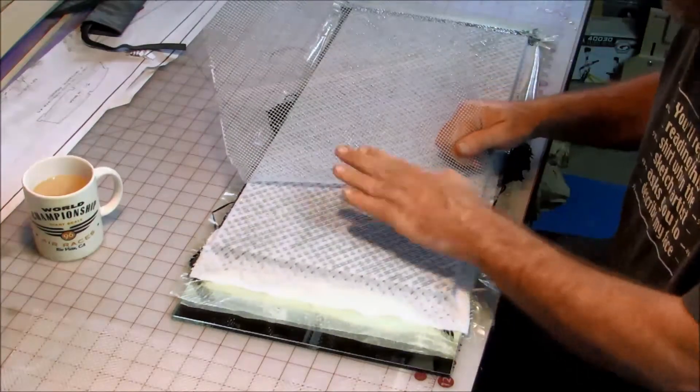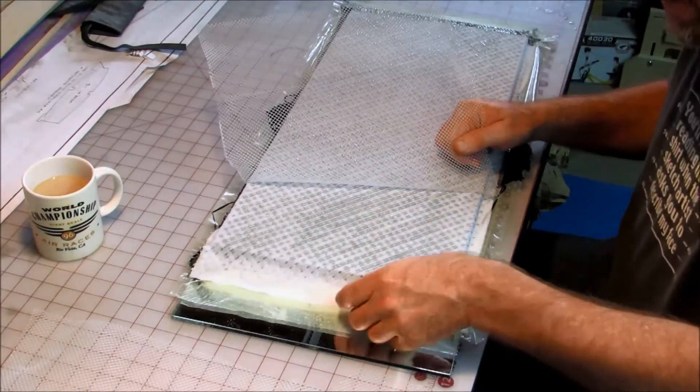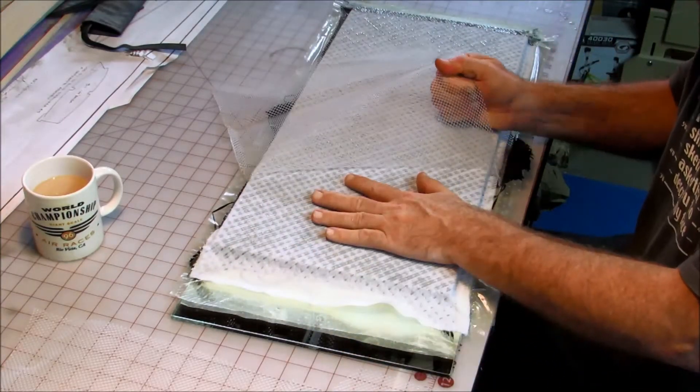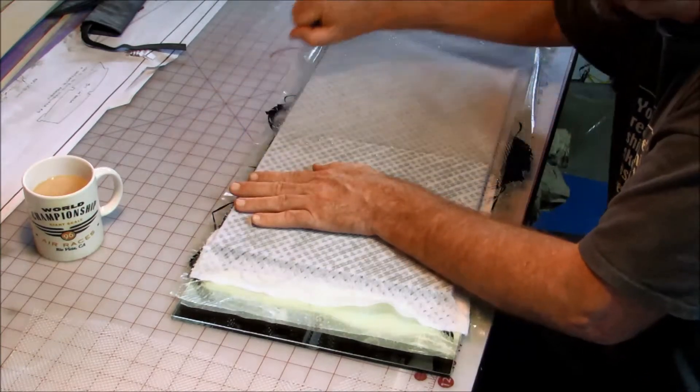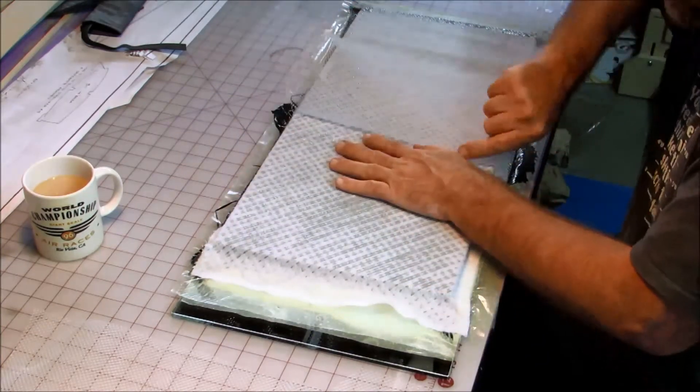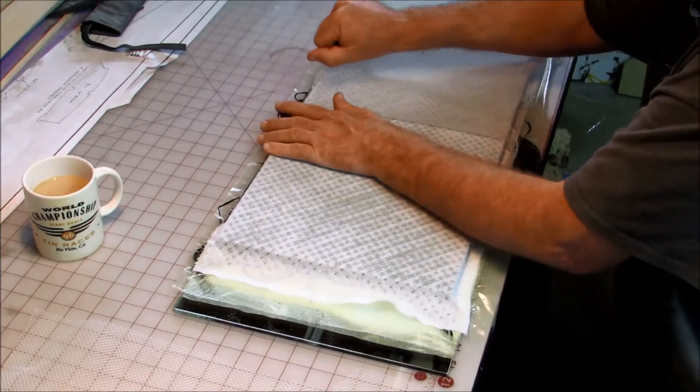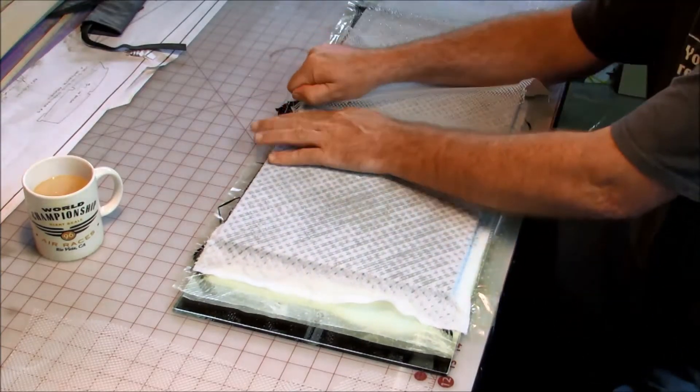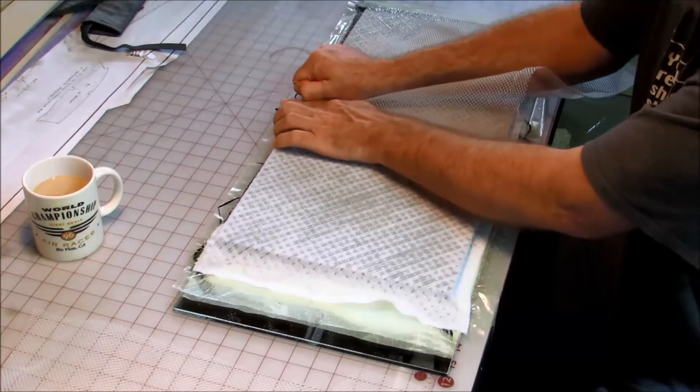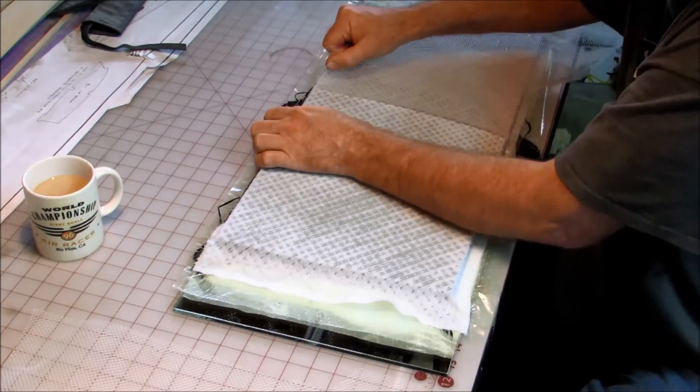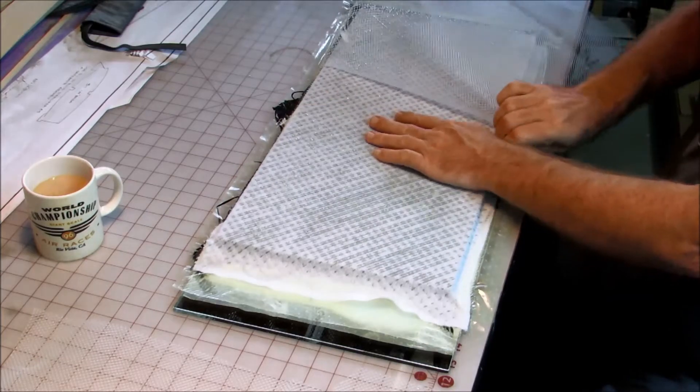That was a wet layup. You can tell because this cloth, this batting material, is pretty well soaked with resin. Which is good because it took 360 grams of resin to do this layup.